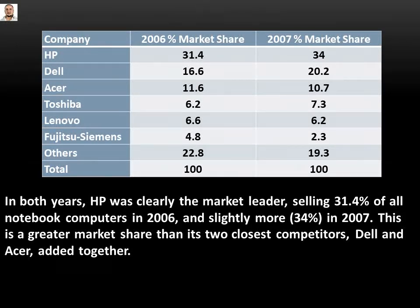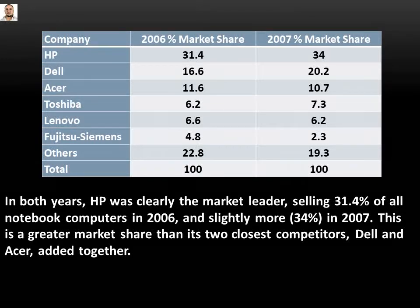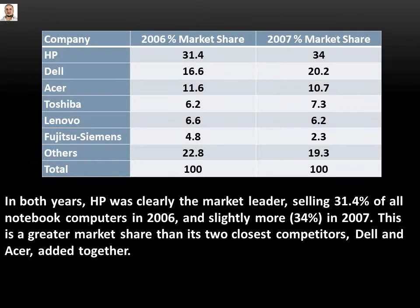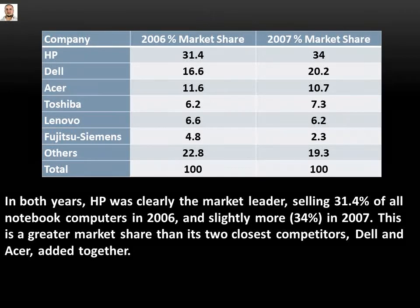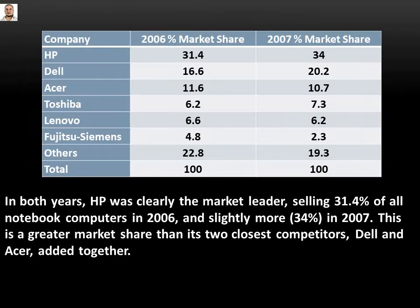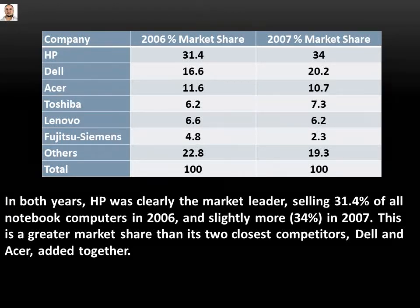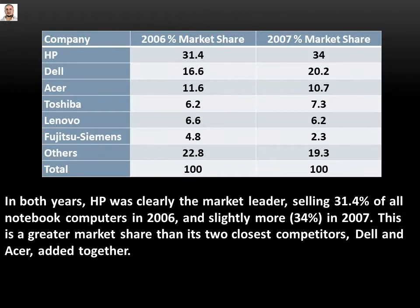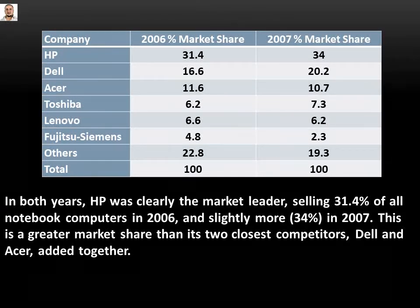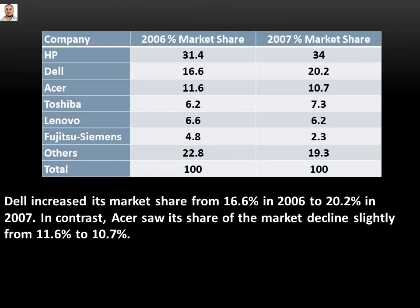The word 'slightly' gives a high band score. 'Sharp' also, if we have a big gap or big difference. We used 'clearly' — that's a medium band score word. We may also use 'obviously,' which is better and gives you a higher band score.